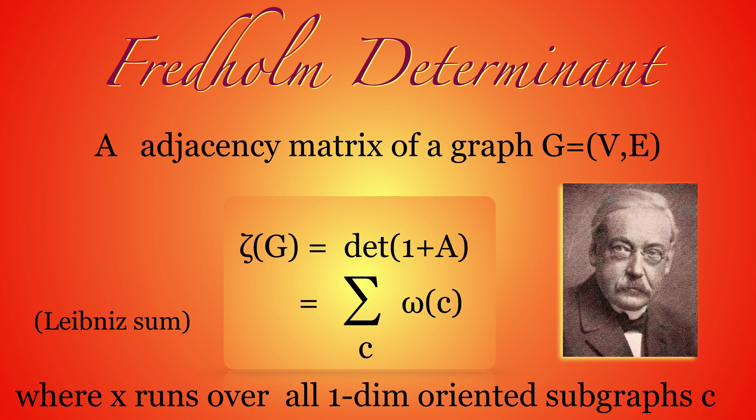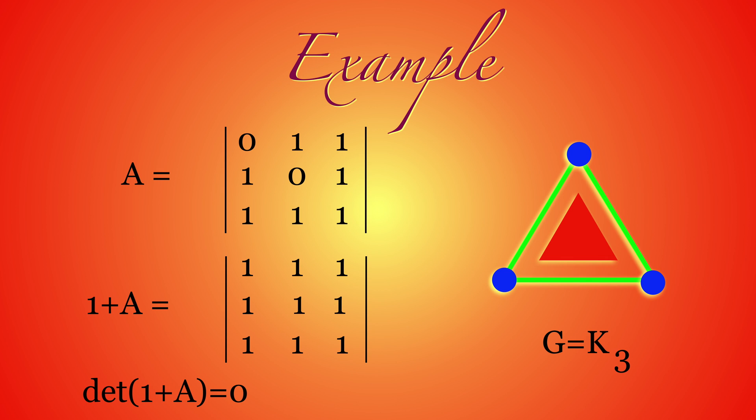The determinant of A, on the other hand, would only sum all cyclic oriented subgraphs. The Fredholm determinant of the triangle is zero. It is true for all complete graphs with more than one vertex, because the Fredholm matrix has all entries one and is obviously singular.